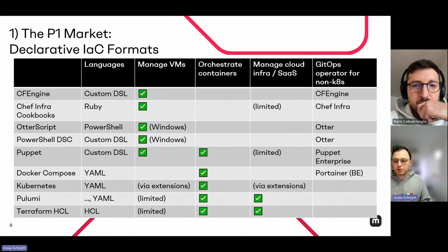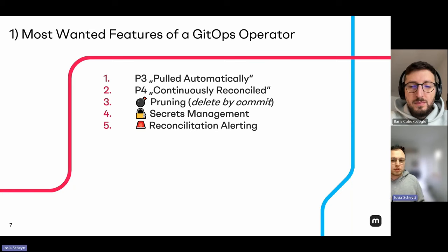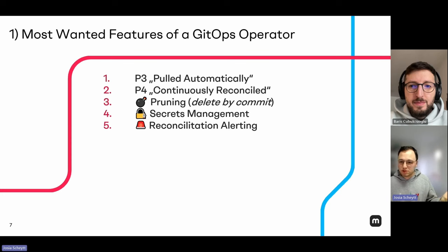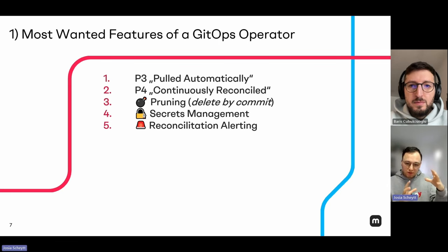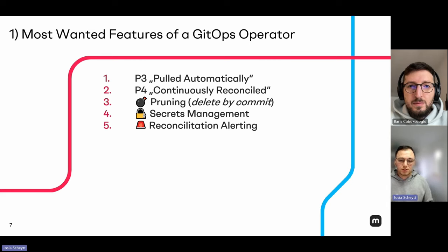Let's imagine we are in a situation where we can use at least one of these declarative formats. What features would we expect from a GitOps operator supporting our desired file format? This list is opinionated — it's what we think is important. We want to pull the Git repo and continuously reconcile its contents, deploy declarative contents from the repo (that's the bread and butter of principles three and four), git-based pruning where deleted content in the repo is also deleted from the target system, secrets management so we don't have plain text secrets in our git repos, and alerting when reconciliation goes wrong.